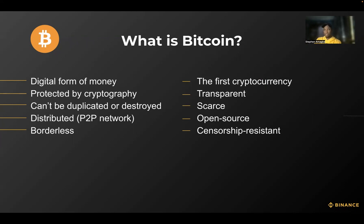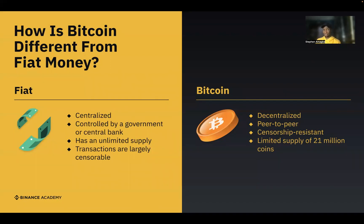Bitcoin is transparent, open source, borderless, and censorship resistant — the same properties as the blockchain technology. Importantly, bitcoin is scarce, which is a very important aspect of money. Scarcity is what gives assets value. With most fiat currencies, governments can print a surplus, which causes the value of those currencies to depreciate over time. Bitcoin solves that because there can only ever be 21 million bitcoins. We're currently around the 18 to 19 million mark, and once we reach 21 million, no more bitcoin will enter the system.